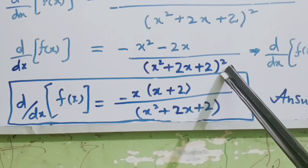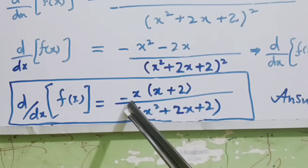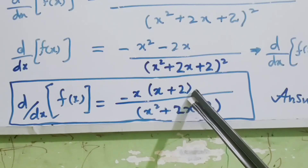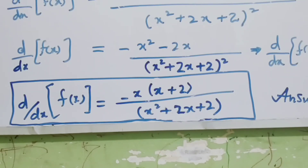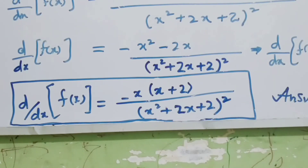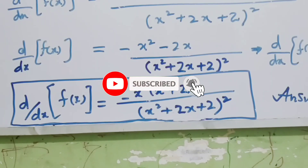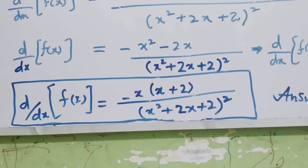Taking −x common from the numerator gives −x(x + 2). So the final derivative of f(x) = −x(x + 2) / (x² + 2x + 2)². This concludes our answer and our video lecture. We will meet in the next lecture. Till then, Allah Hafez.